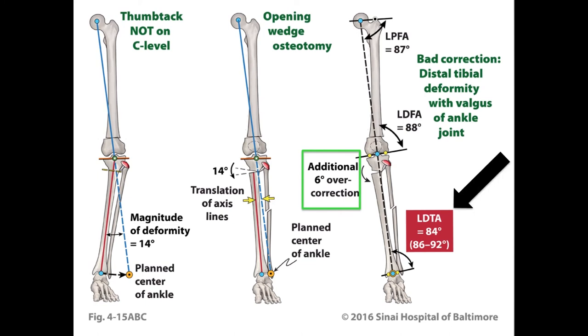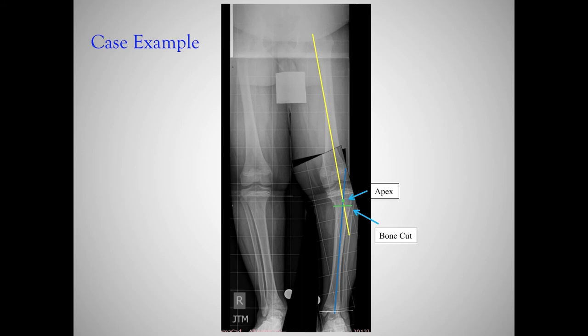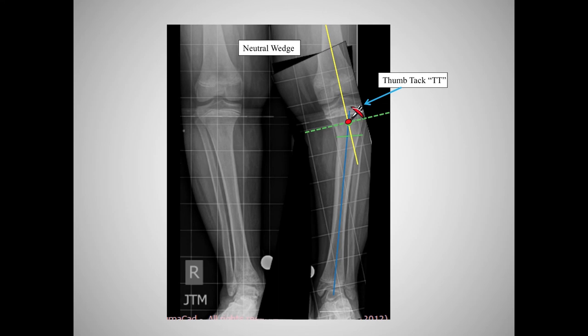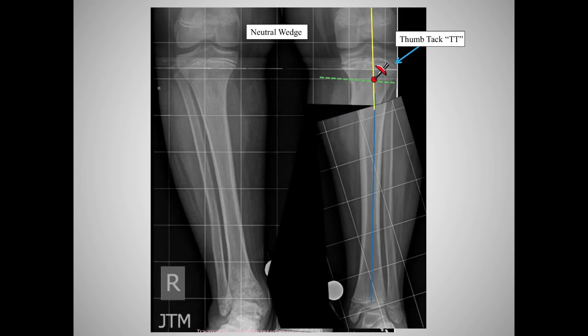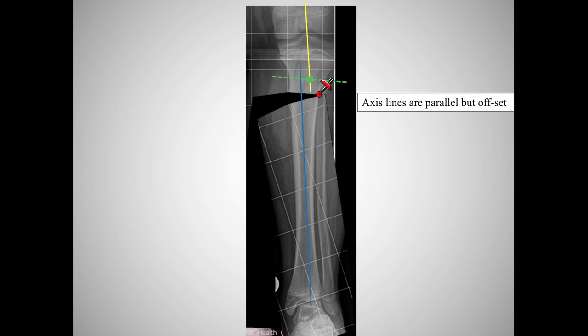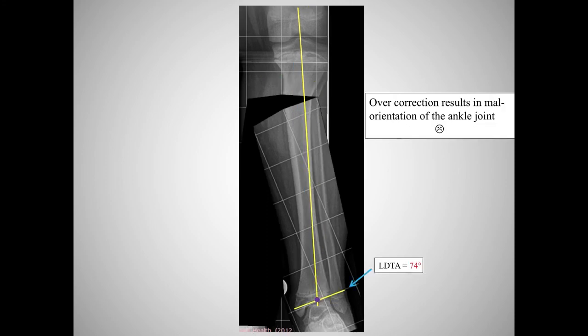This overcorrection creates a secondary problem, and I've seen it multiple times. Here's a young man — femur is corrected, extend the axis into the proximal tibia, we see the apex and the bone cut. The correction level is there. If we hinge on the apex, you have perfect alignment — the bone has to translate, you have a normalized mechanical axis, and maintained ankle normality. If you hinge at the osteotomy site away from the apex, you'll have a translational deformity. If you try to fix that by overcorrecting, you've created an LDTA of 74 degrees with impingement and ankle pain.